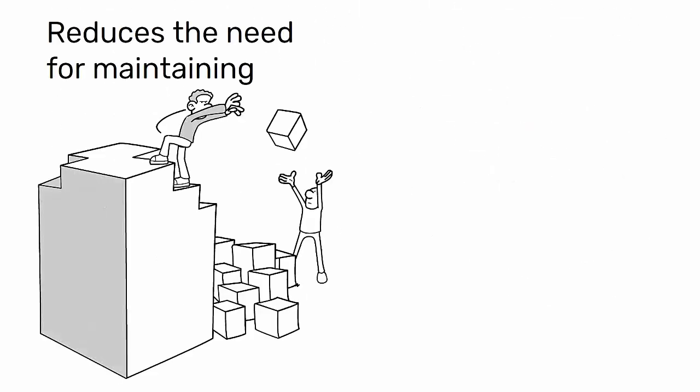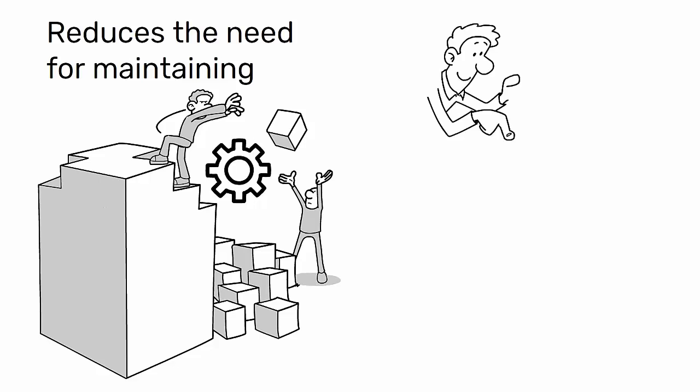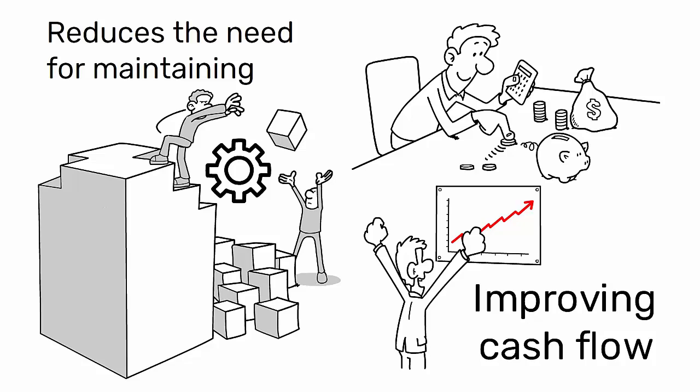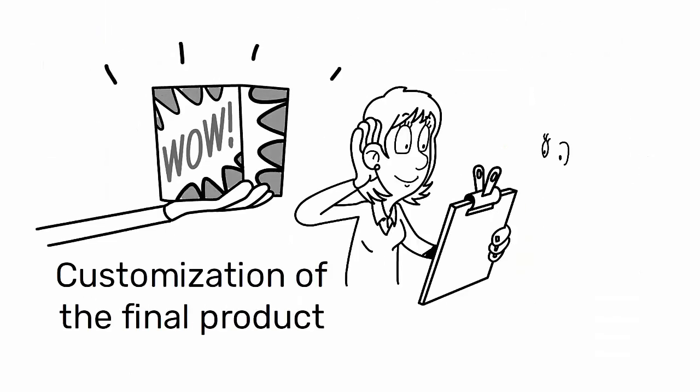ATO strategy reduces the need for maintaining a large inventory of finished products, thus saving on inventory holding costs and improving cash flow. It also provides a way to offer customization of the final product to the customer's specific needs.